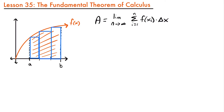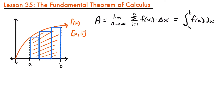It turns out that if we have a function f of x defined on an interval from a to b, and this limit exists for that function, then that function is said to be integrable on this interval from a to b. We would say that this area is equal to the integral of f of x dx, integrable from the lower bound a to the upper bound b. We write those bounds on our integral sign by putting the lower bound at the bottom and the upper bound at the top. This is what we call a definite integral, and it can be used to find the area of a region underneath a function on an interval from a to b.